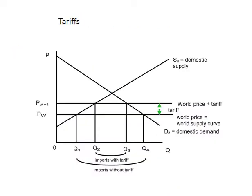Here is the graph drawn for you. The world price plus tariff has shifted the world supply curve upward. Imports without tariff ran from Q1 to Q4 at the world price. Once the price increased, domestic producers moved along the supply curve producing more, while consumers moved along the demand curve demanding less. Imports after the tariff have shrunk from Q4−Q1 to Q3−Q2, and the shaded box is the tariff revenue.